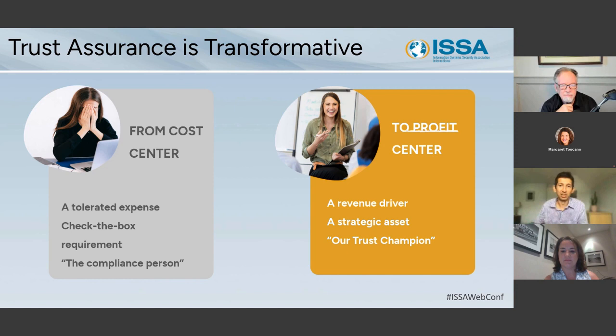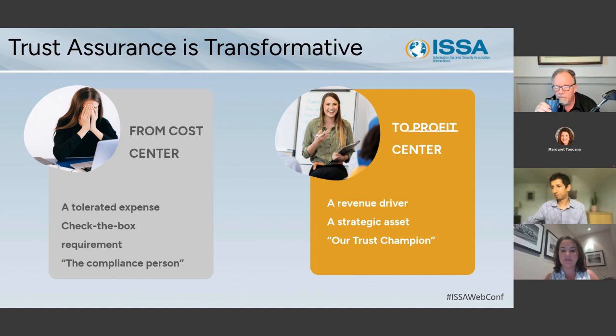If you have a requirement to sell to the federal government versus the private sector, you still have security needs. What's the base requirement? What's the rigor? What's the contract? Who's your audience? It's learning how to streamline your compliance needs so that it's applicable to multiple frameworks, not just one.